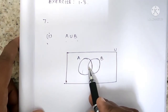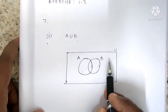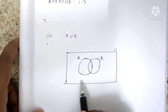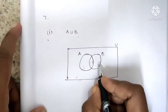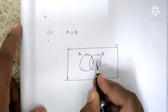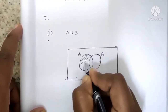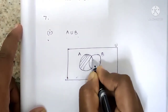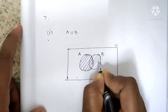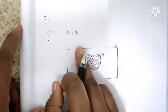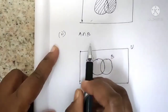A union B is the whole combined area — shade A ring and B ring together. This gives the full A union B shaded region.